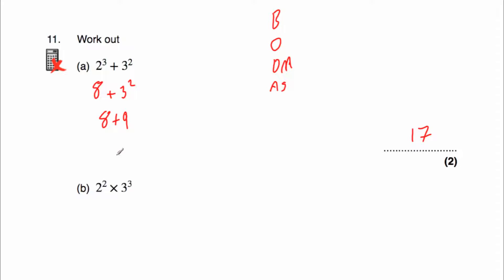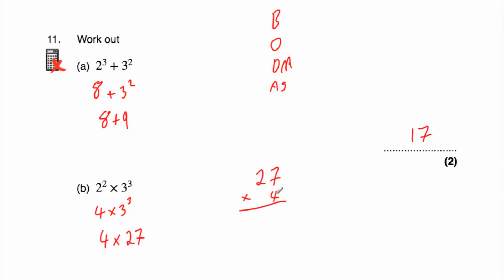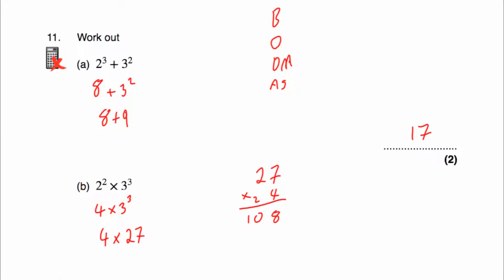Question 11b: work out 2 squared multiplied by 3 cubed. No brackets; orders first, left to right. 2 squared is 2 times 2, which is 4. Then 3 cubed is 3 times 3 is 9, times 3 is 27. Now we have 4 multiplied by 27. For a non-calculator method: 27 times 4 — 4 times 7 is 28 (put 8, carry 2), 4 times 2 is 8 plus 2 is 10 — so 108.